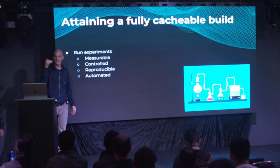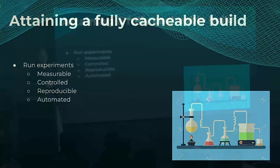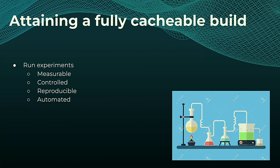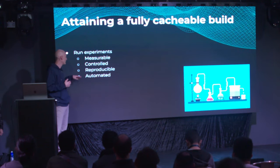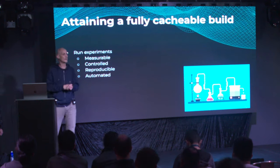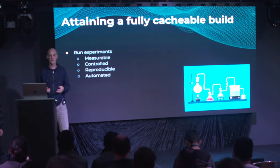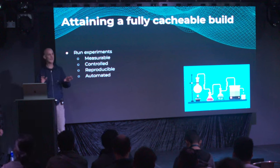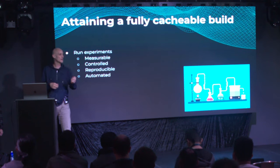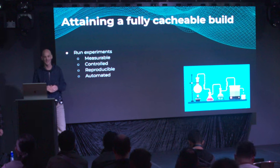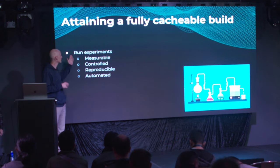To attain a fully cacheable build, we propose running experiments. Those experiments should be measurable, should happen in a controlled environment so outside builds don't affect them, should be reproducible so a colleague can repeat them and get the same results, and should be automated — because many human errors creep in with something as simple as running the build twice and clearing the cache.